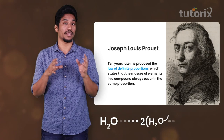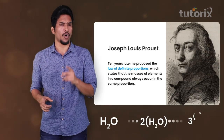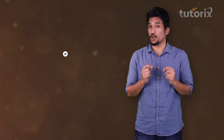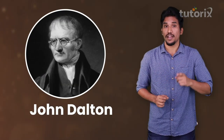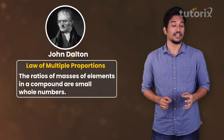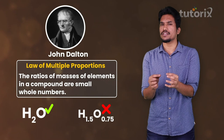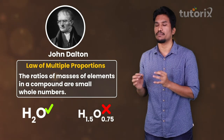Now these two theories had no reference to atoms yet. John Dalton built upon them and developed the law of multiple proportions, which states that the ratio of masses in a compound always occur in whole numbers. John Dalton's law of multiple proportions was based on experimental data.